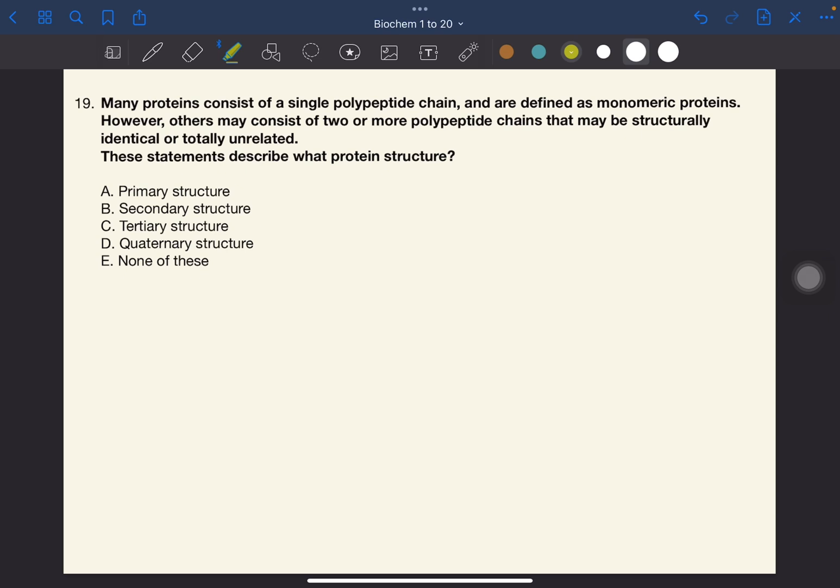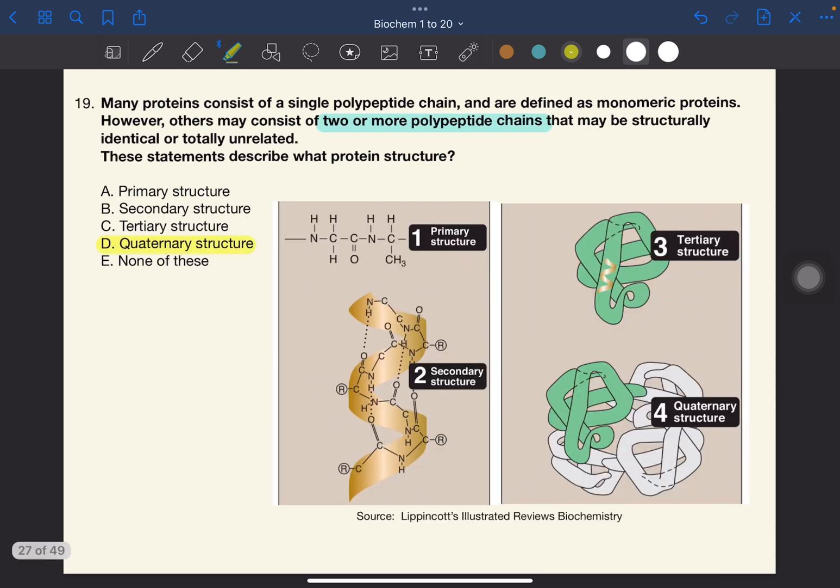The answer to this one is D, quaternary structure. As you can see in the photo below, only the quaternary structure has two or more subunits. This is one subunit, another one, and another one. A very popular example of this is hemoglobin.